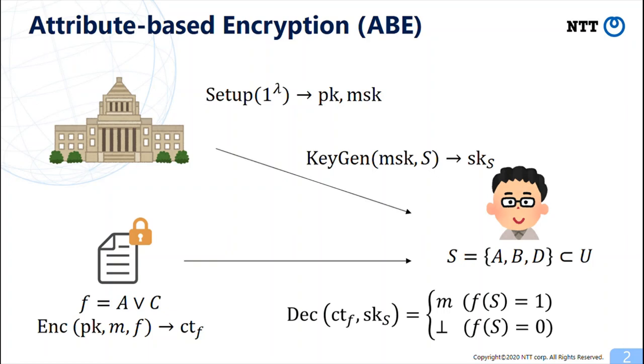Here, the policy F is expressed by a boolean formula and associated with the ciphertext. So this scheme is called ciphertext policy attribute-based encryption for boolean formula.